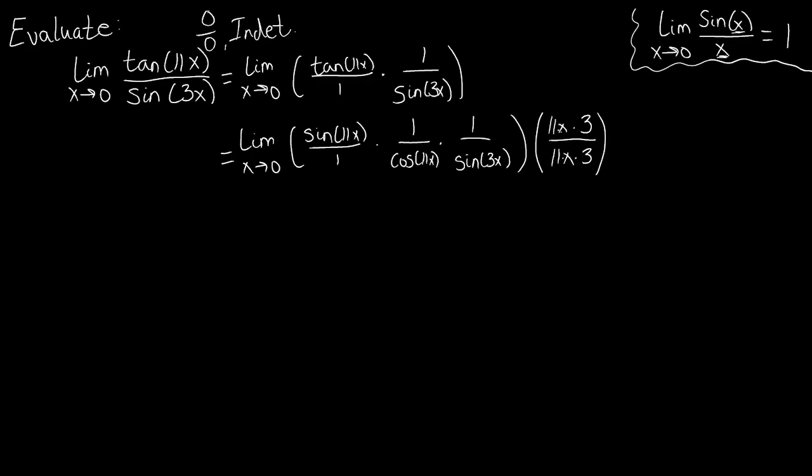So what we're going to do is we're going to use another property of math, namely that multiplication of real numbers is commutative, to allow us to move things from this that we're multiplying by into our original function, so we can use this limit here. So what we're going to do is we're going to take this x times 3 and move it to this far fraction, this right fraction here, and we're going to move 11 times x into this front fraction.